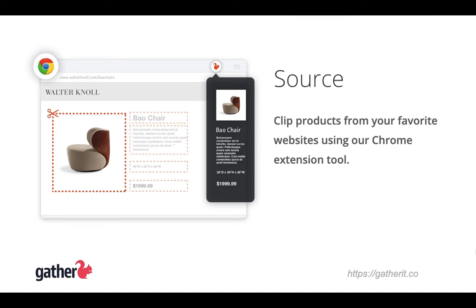From any website, just grab an image as well as the specification details and drop them into the Clipper, and then save it all directly to a selected project in Gather.